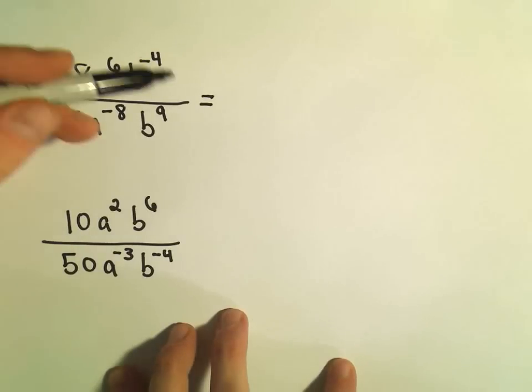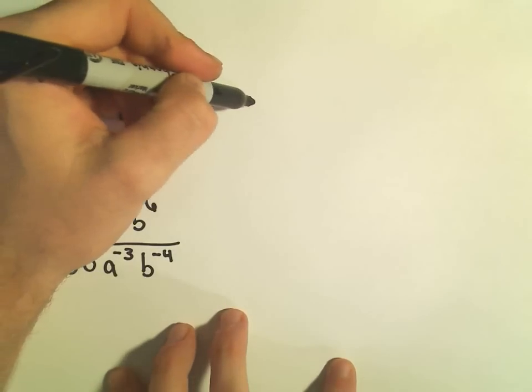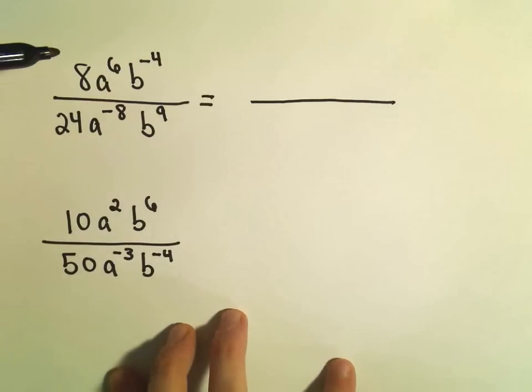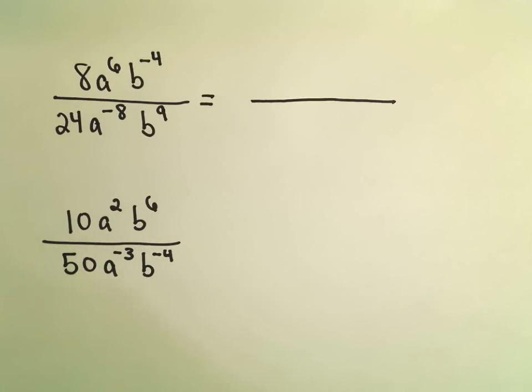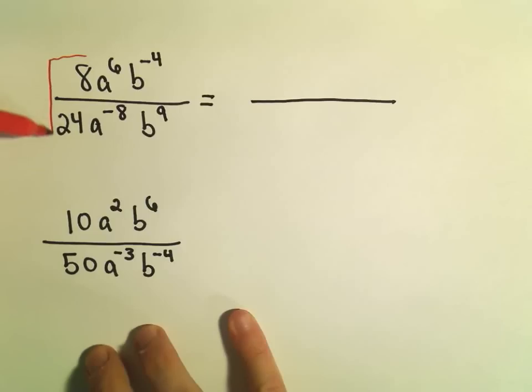You can start by subtracting the top minus the bottom. My own personal preference is first I like to move things around. I am going to do kind of two steps at once. I'm going to move the 8 over 24. I'm going to simplify that first.